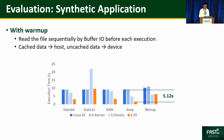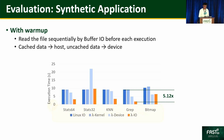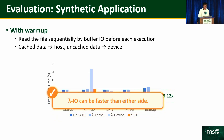With warmup — where the file is read sequentially via buffered I/O before each execution — Lambda I/O is faster than either side alone. After warmup, some data is cached on the host and the rest remains on the device. For cached data, Lambda I/O dispatches requests to the host; for uncached data, it dispatches to the device. This allows Lambda I/O to leverage both sides and achieve better performance.